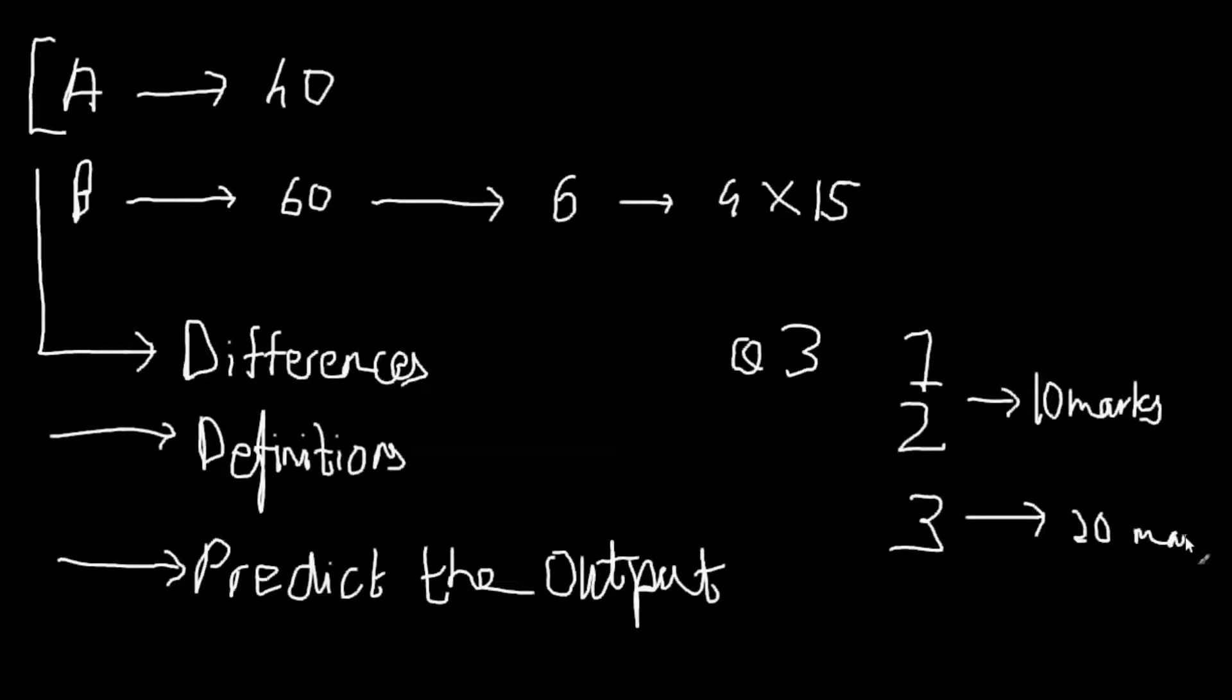Now, the distribution of these three is, as I said, nothing fixed. It might change anything. They can give you anything. But I'm going to tell you what usually happens. Out of these 20 marks over here, question 1 and question 2, there will be at least six or eight marks on differences. There'll be another four, at least, on definitions.